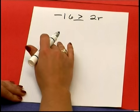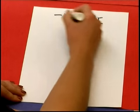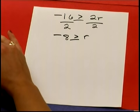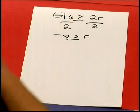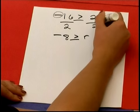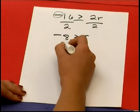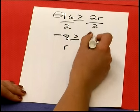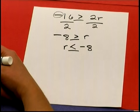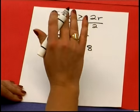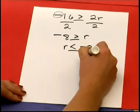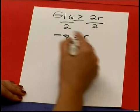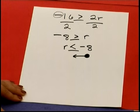To solve this problem: negative 16 is greater than or equal to 2r. We divide by 2 on both sides and rewrite: negative 8 is greater than or equal to R. Now, a lot of people will make the mistake of reversing the sign because of the negative sign. However, we're dividing by a positive number, so we do not reverse the sign. My preference is to rewrite it as R is less than or equal to negative 8, since it's easy to make a mistake drawing the arrow in the wrong direction. So all real numbers less than negative 8 satisfy this inequality.